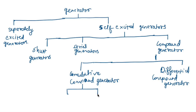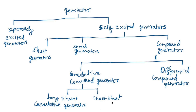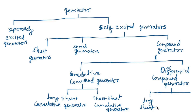Cumulative compound generators are further divided into long shunt cumulative compound generator and short shunt cumulative compound generator.